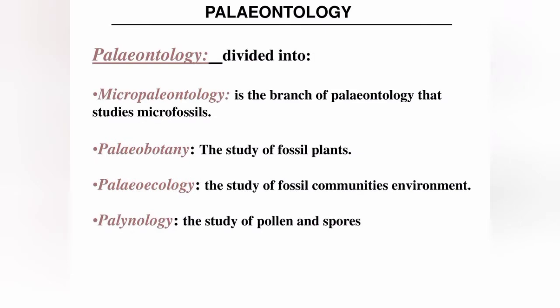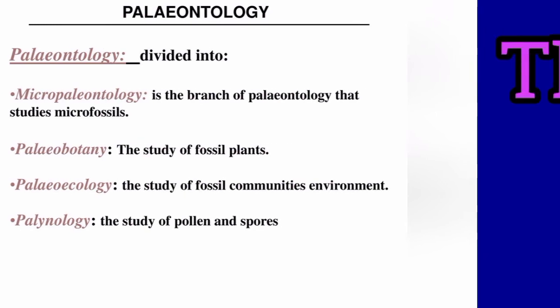Palaeontology is divided into four types. Micropaleontology — it is the branch of paleontology that studies microfossils. Paleobotany — the study of fossil plants. Paleoecology — the study of fossil communities and environment. Paleoenology — the study of pollens and spores. Thank you so much guys for watching my videos.